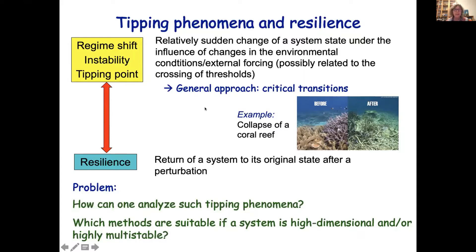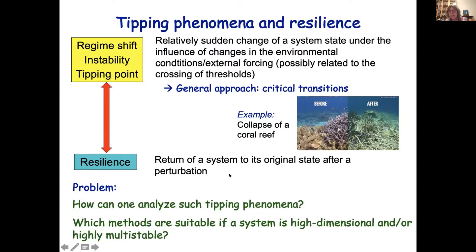Tipping phenomena is in a certain way an old phenomenon, because it has developed in different disciplines of science even with different names. In ecology these kinds of transitions are called regime shifts; in mathematics they are often related to instabilities; and in climate science and mathematics it's related to tipping points. There is also the theory of resilience, which talks about the ability of a system to return to its state after a perturbation. Both are two sides of the same coin, because a resilient system would not go into instabilities or tipping phenomena.